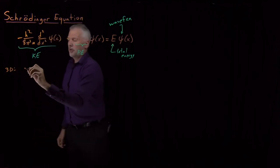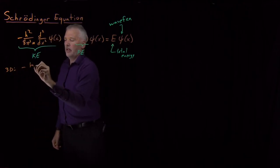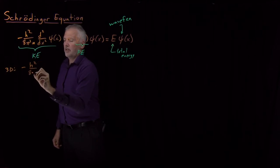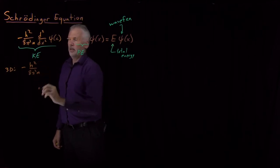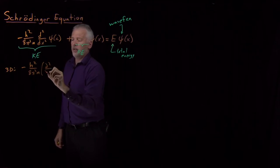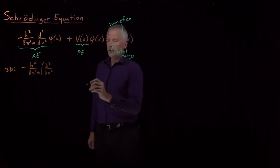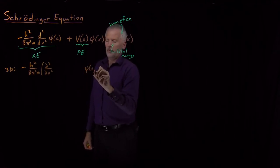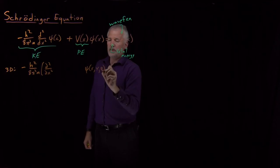In three dimensions, Schrödinger's equation looks like the same collection of constants. Now, instead of second derivative with respect to x, I need to take partial derivatives, because the wave function is going to be a function of three dimensions: x, y, and z.